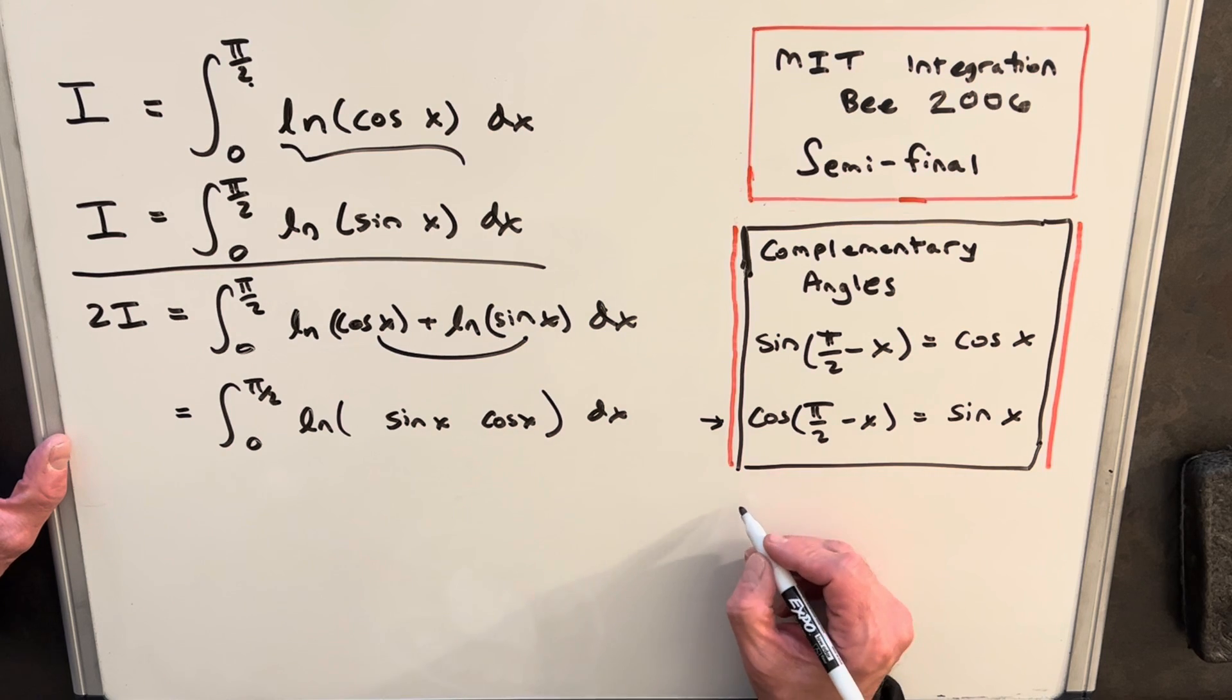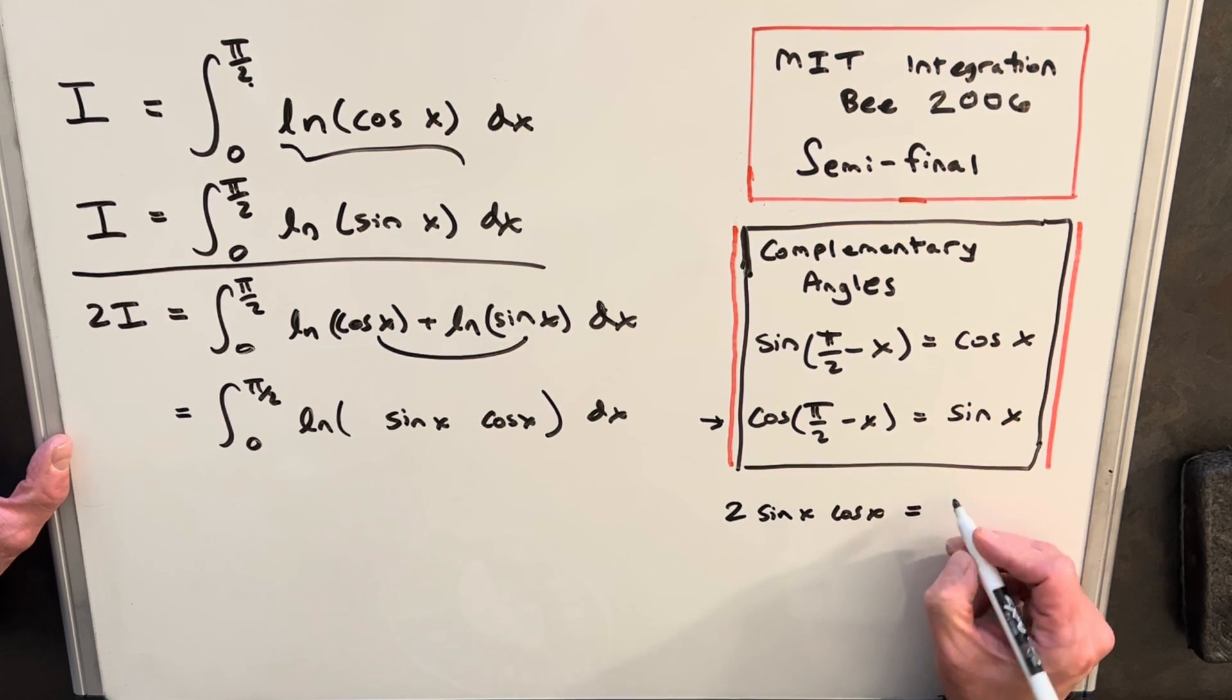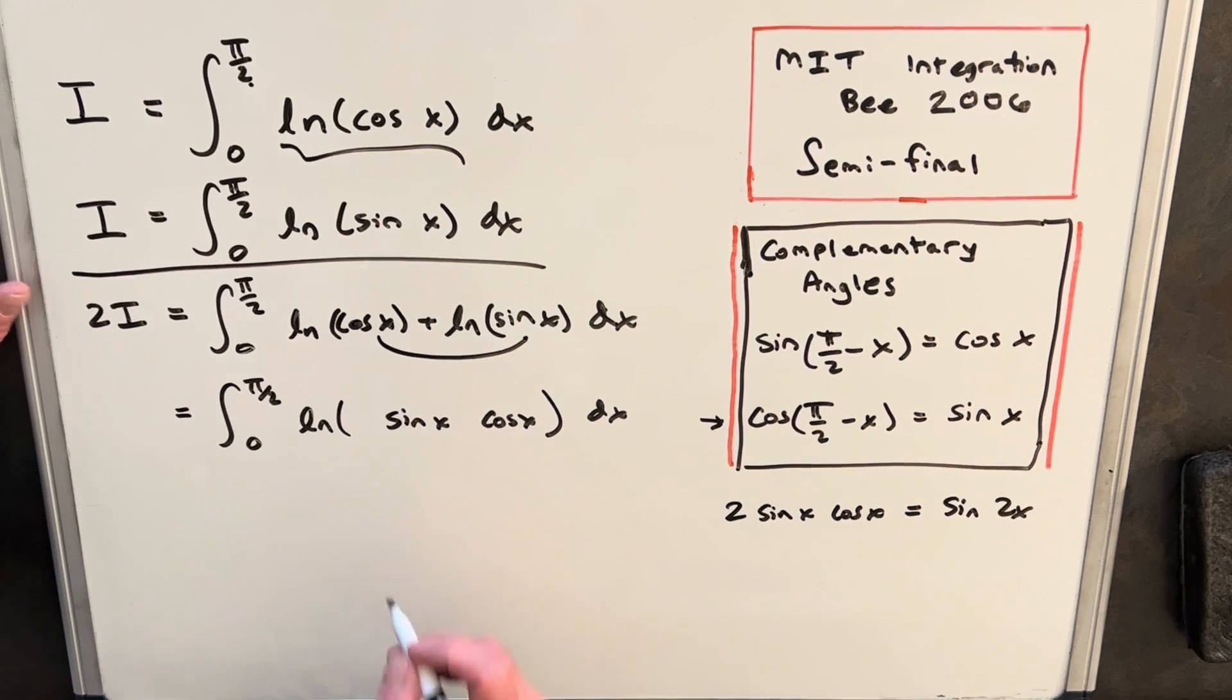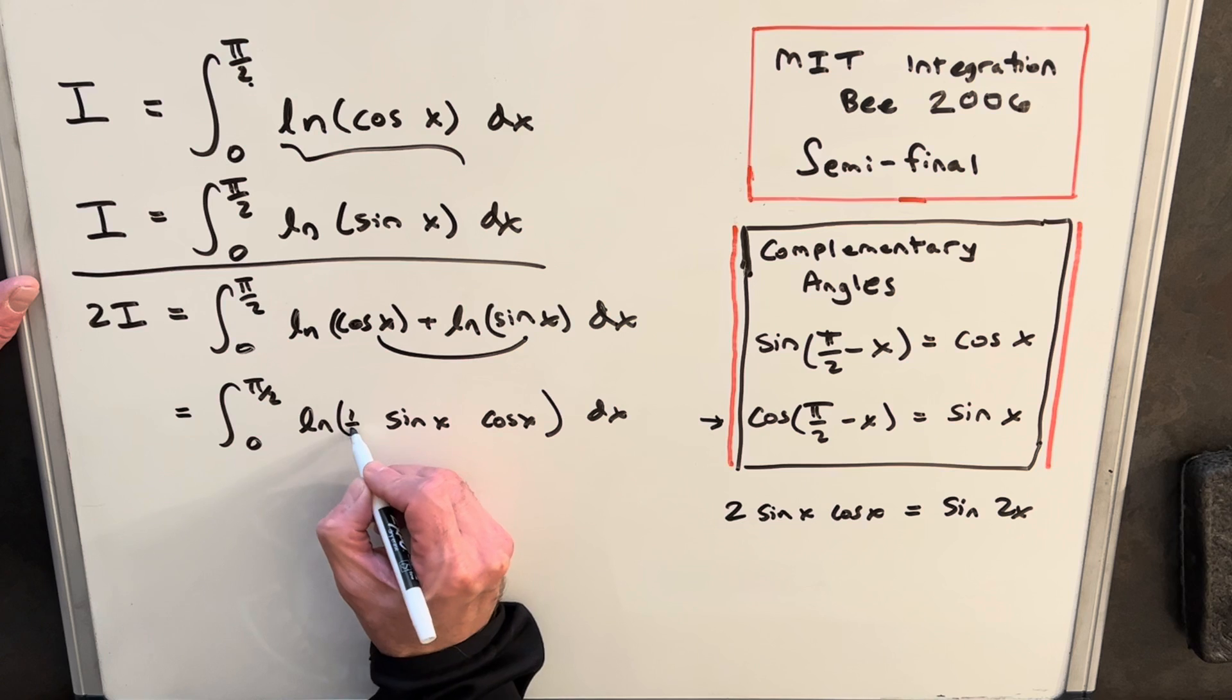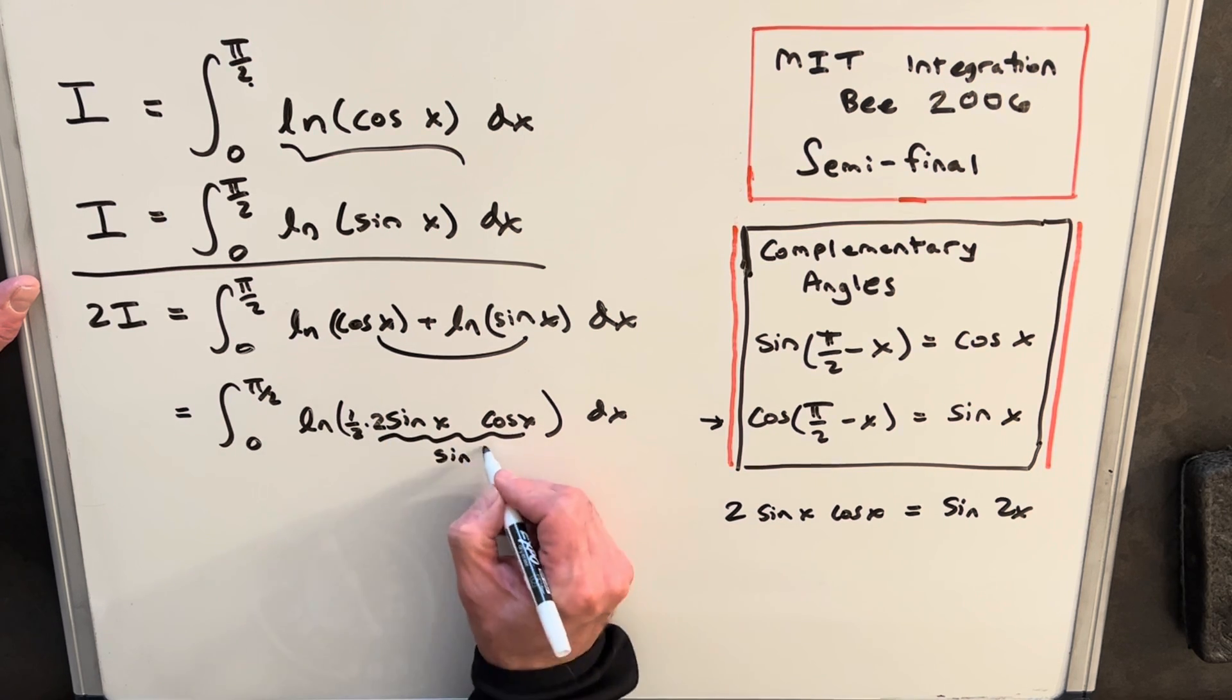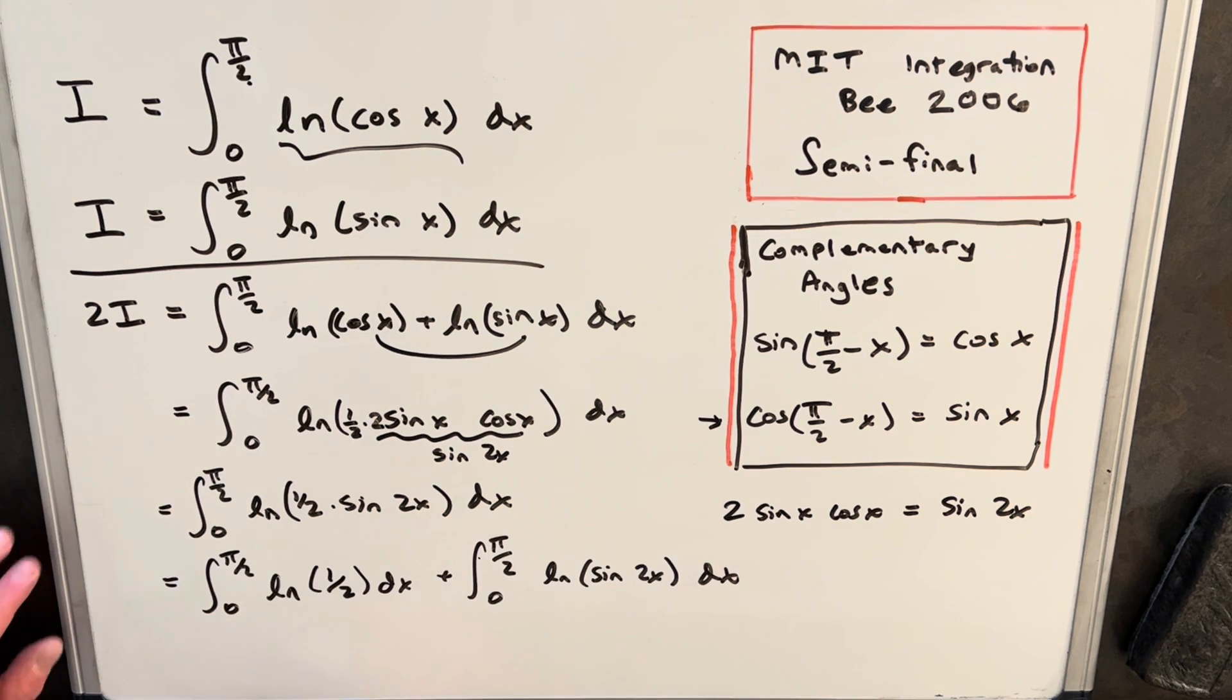And from here, we can make use of this formula that 2 sine x cos x is just sine of 2x. So we'll just have to manipulate this a little bit. We can write a half in front and a 2, and then this is exactly in the form of sine 2x. Then we can use the same property of logs in reverse, where now we can split this apart. I also divided this into two separate integrals.